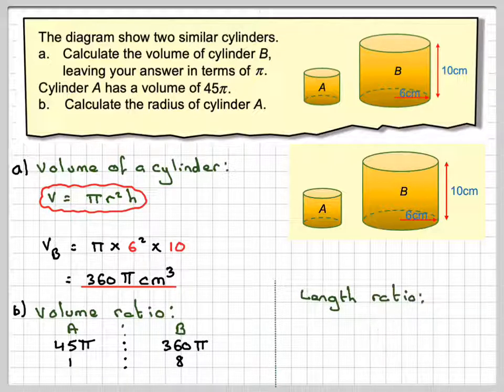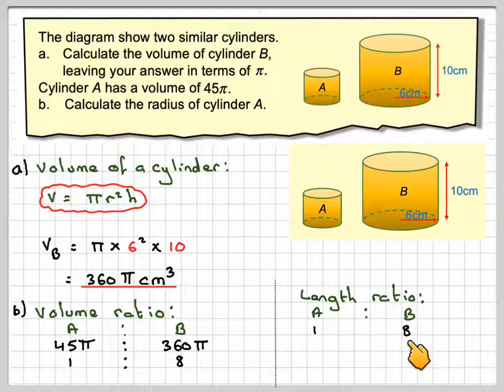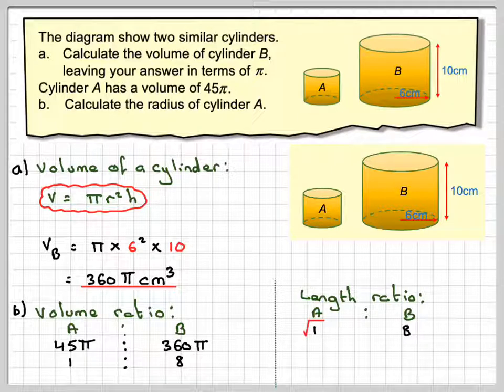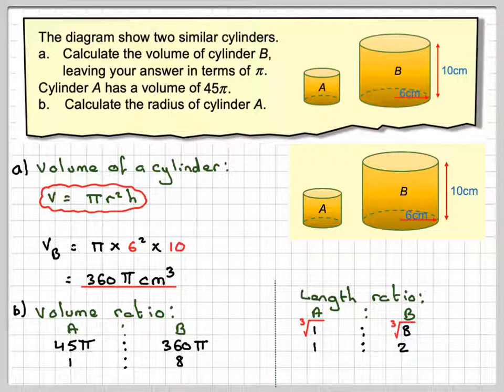The length ratio, to get the length ratio from the volume ratio, you have to take the cube root of each of these things. So take the cube root of 1, the cube root of 8. So we're going to get 1 to 2.